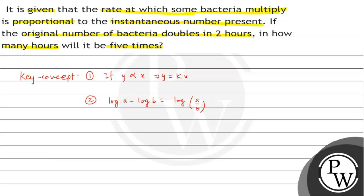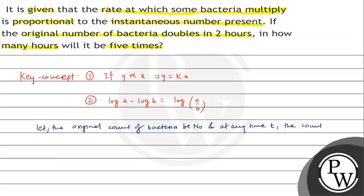Let the original count of bacteria be n0 and at any time t, the count of bacteria be n. According to the question, dn/dt is proportional to n, because it is given that the rate at which some bacteria multiply is proportional to the instantaneous number present.